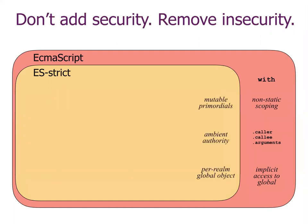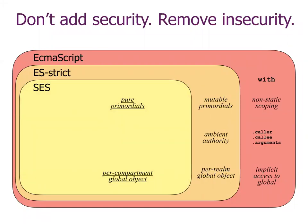ECMAScript strict still has misfeatures that make good defensive, disciplined, or secure programming impossible — which was the motivation for SES. The main differences are that in strict mode you still have a completely mutable set of primordials, where any code linked into that realm can completely corrupt the entire realm by destroying the primordials, and all code in the realm has access to the same global object, creating total mutual vulnerability of every module to every other. In SES, the primordials are transitively frozen and made harmless, and we create separate global objects per compartment, giving us a featherweight isolation boundary within a realm.